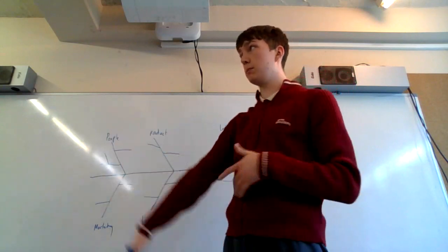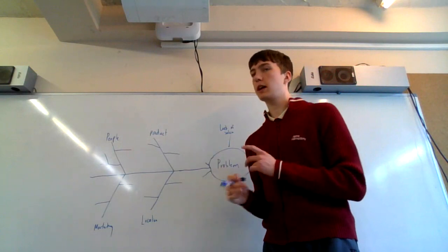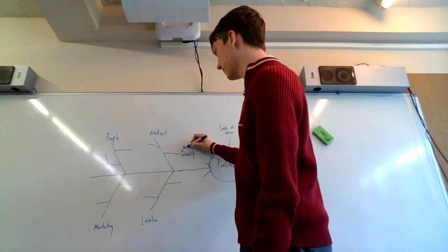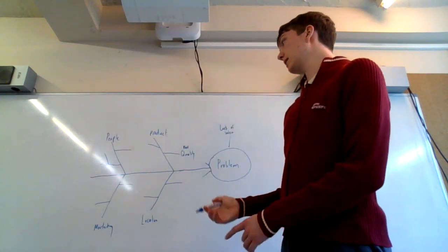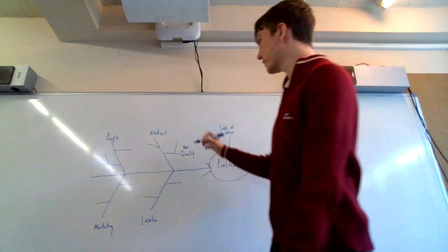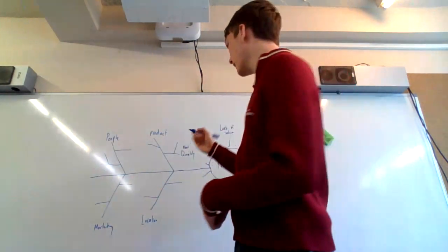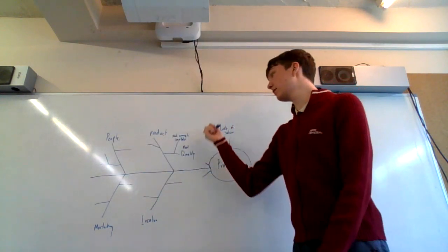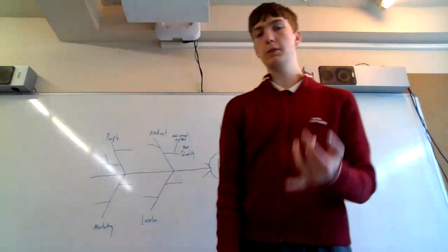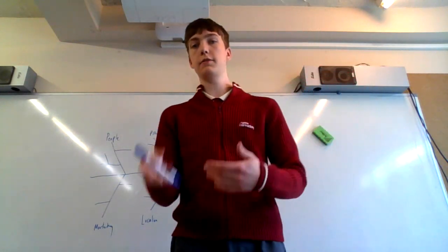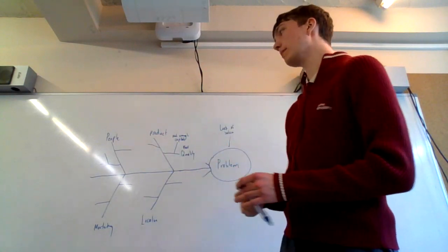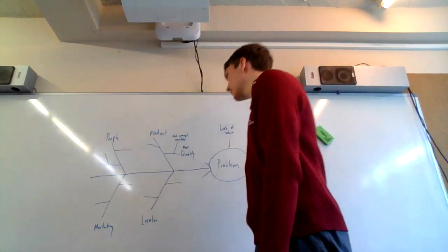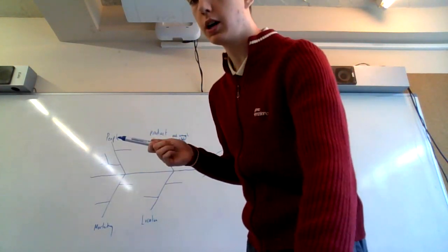Even some of those branches could have a sub-branch, so you can get to a third level. On each sub-branch you're specifying what is wrong — with the product, the people, the marketing, the location. The big sticks are the primary causes, and the smaller branches are the secondary causes. For example, with product: what's wrong? Maybe poor quality. Why is it poor quality? Not enough capital — you're not investing enough, so your factory equipment is bad. You can keep adding branches to create a really complete diagram.